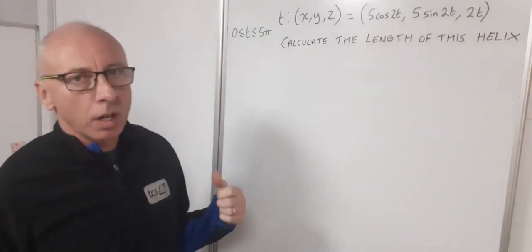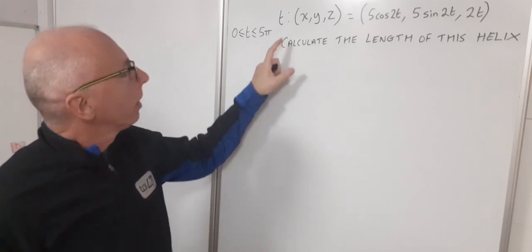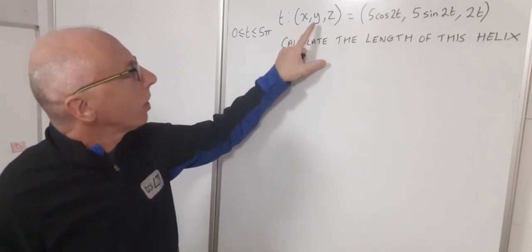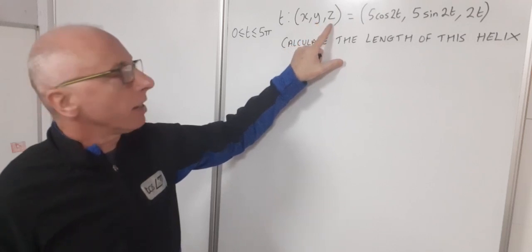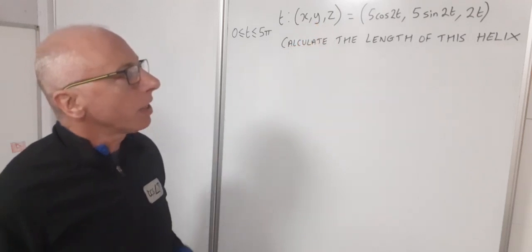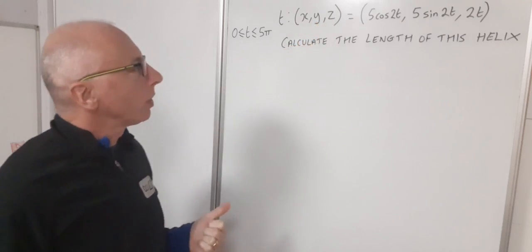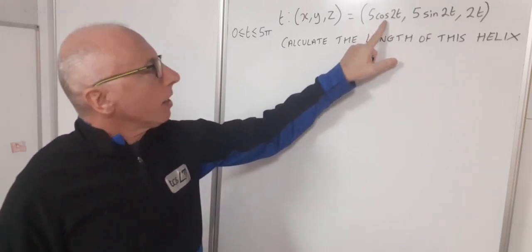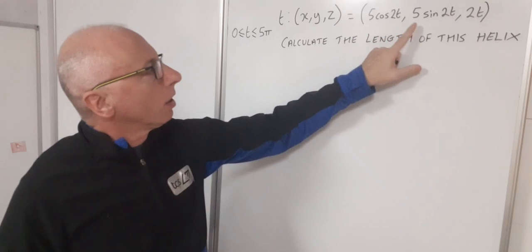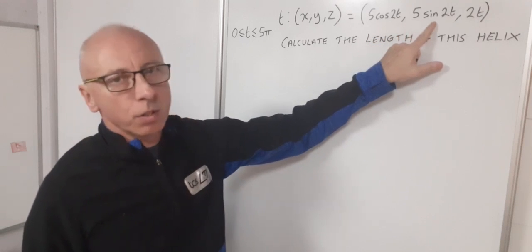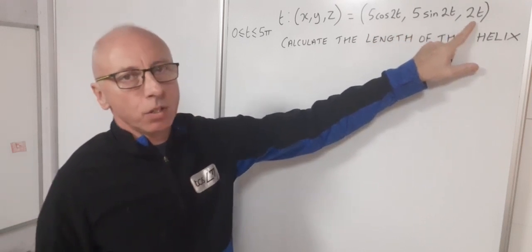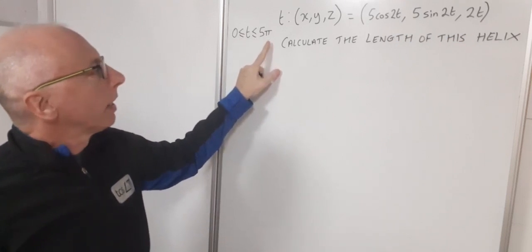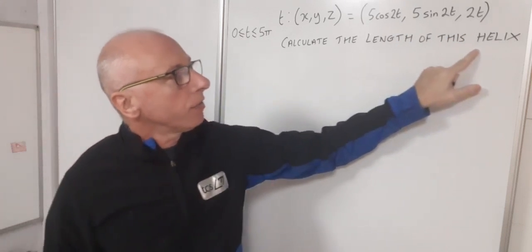So in this question here, we've got a parametric equation defined by T. We've got X, which is a function of T, Y is a function of T, and Z is a function of T. So it's a three-dimensional curve, which is what's being sketched here. X is 5cos(2t), Y is 5sin(2t), and Z is 2t, where T is between zero and five pi. Now, we want to calculate the length of this arc.